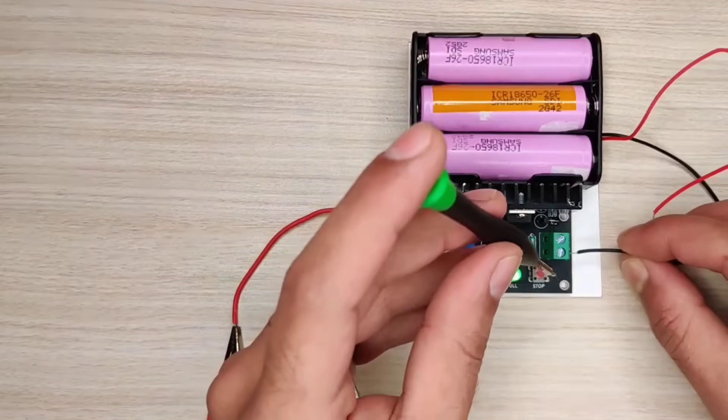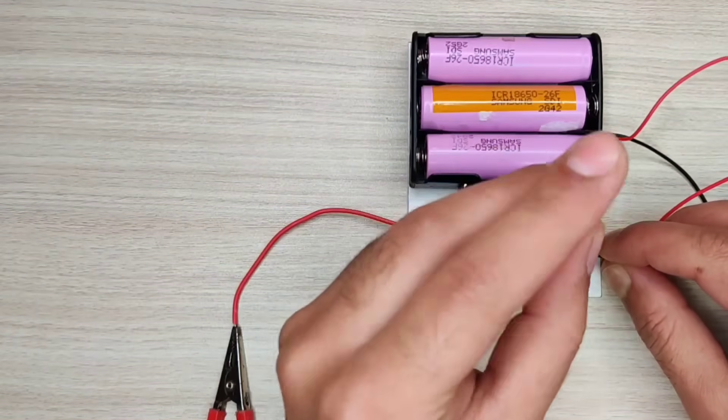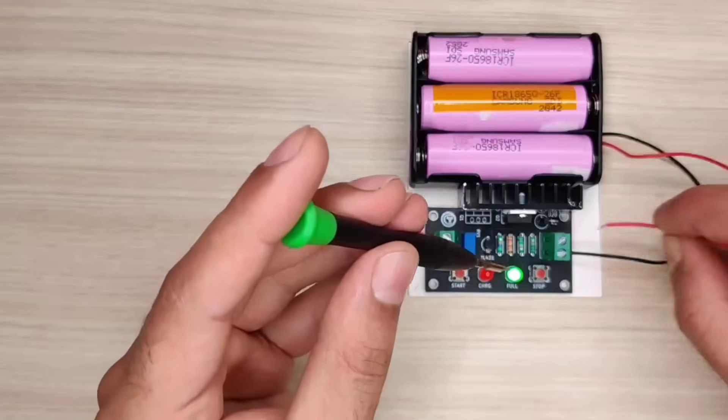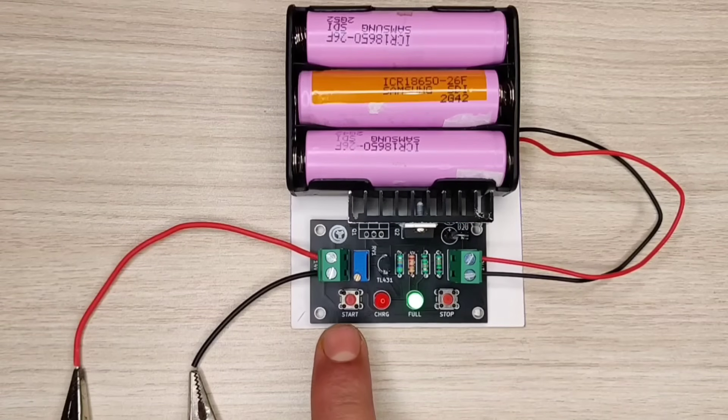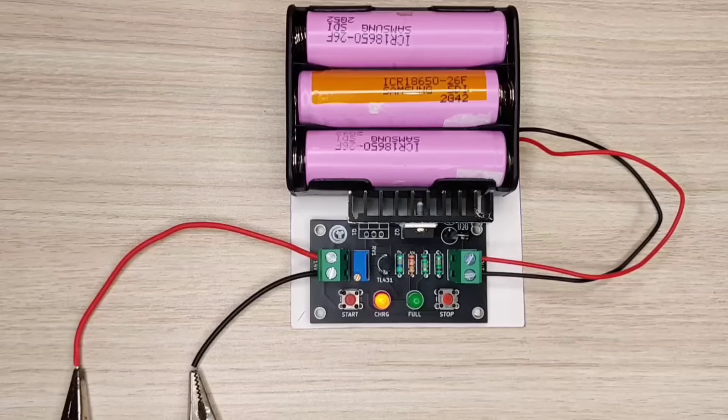Now connect the battery at output connector. Press start button, to start battery charging, so red LED turns on.